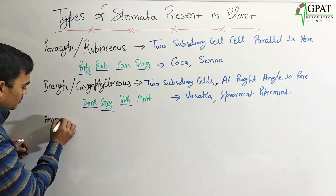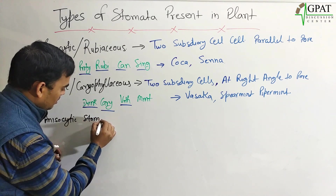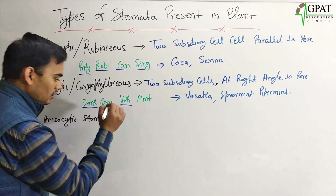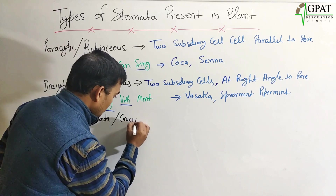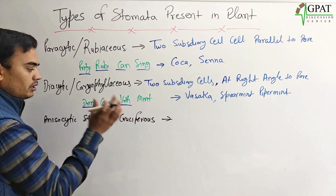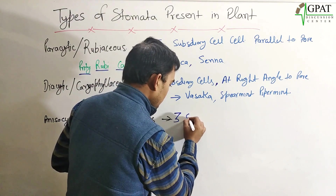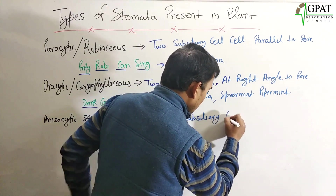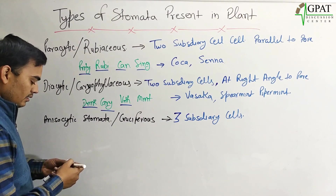The third type is anisocytic stomata, also known as Cruciferous stomata. In anisocytic stomata there are three subsidiary cells.